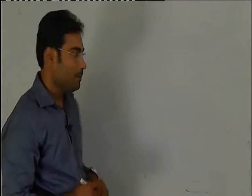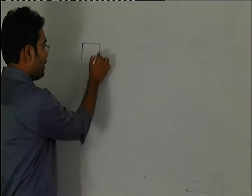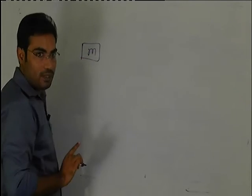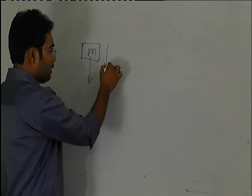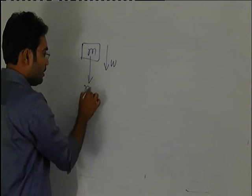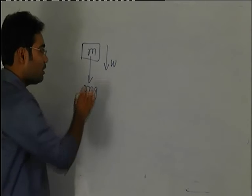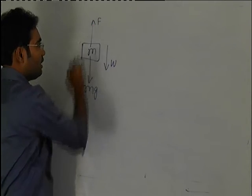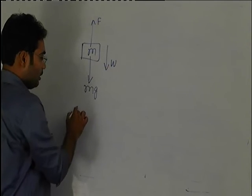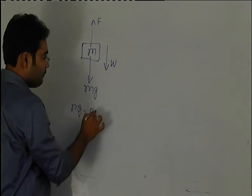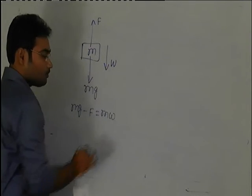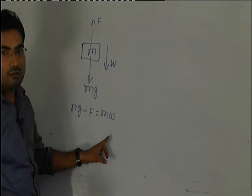In this problem, an aerostat of mass m is falling down with acceleration w. The weight is mg. From the dynamic equation, mg minus F equals mw, based on Newton's second law.